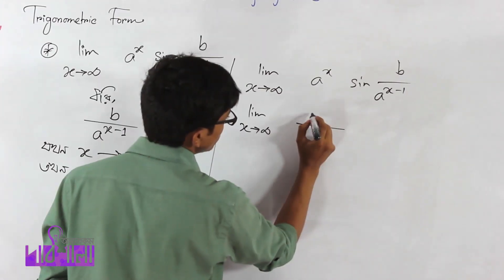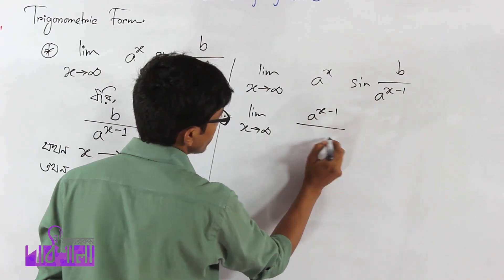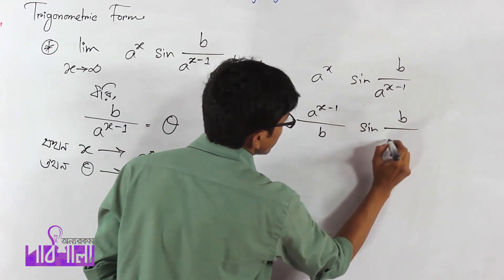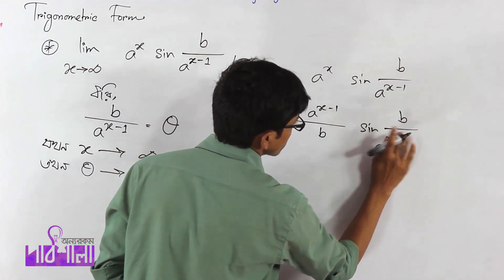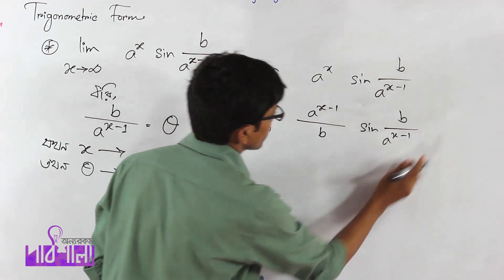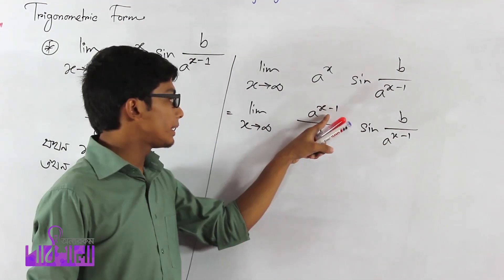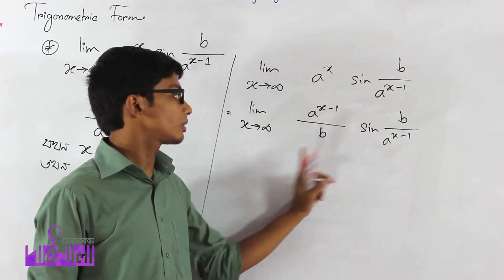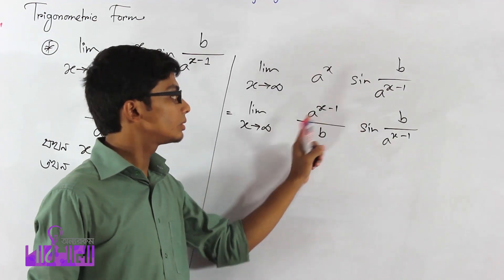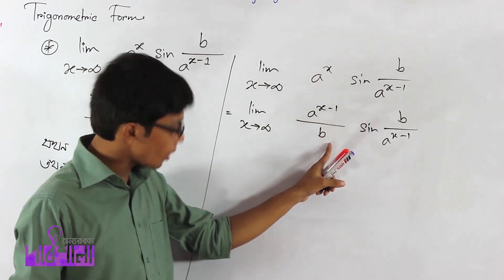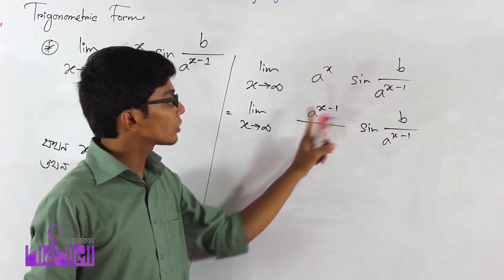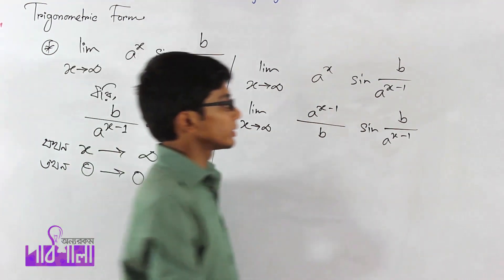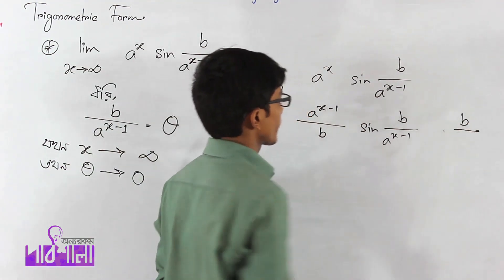So the result is 0. We write a to the power x minus 1 divided by b times sin(b by a to the power x) minus 1. As you write 1 by theta, let's try b to the power x — the final answer follows from the standard limit formula.